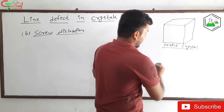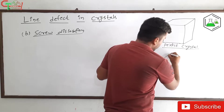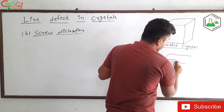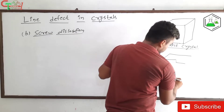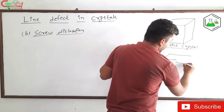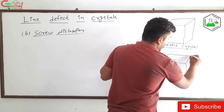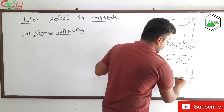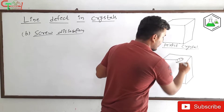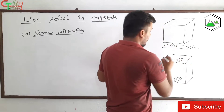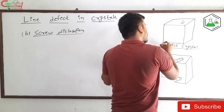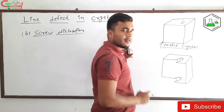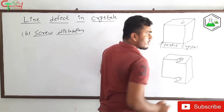In screw defect, this is what happens — you can see here, I've just made a diagram of it. When we apply stress in opposite directions — downward from one side and upward from the other — we get this type of structure in the crystal.